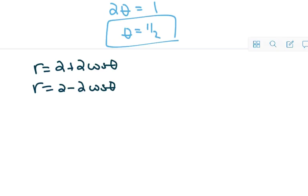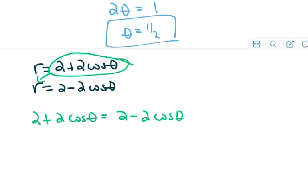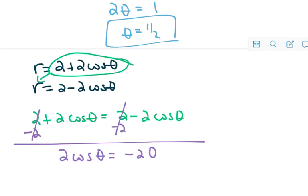And I'm going to do this by hand, by substituting this into the other equation in place of r. So, I get 2 plus 2 cosine theta equals 2 minus 2 cosine theta. So, the first thing that I would do is I would get rid of these two. They just go away. And I'm left with 2 cosine theta is equal to negative 2 cosine theta.